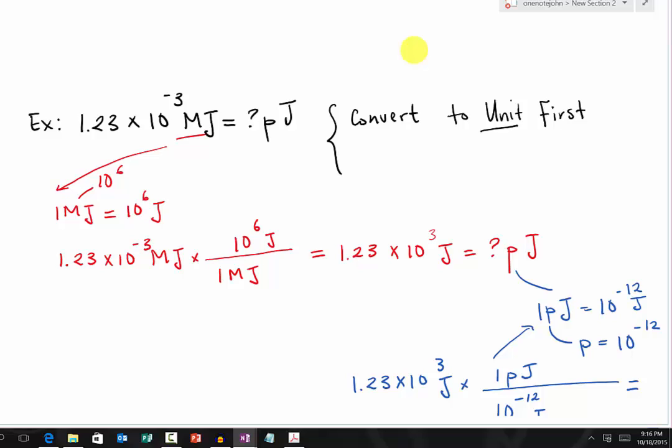Here we have an example. We have 1.23 times 10 to the negative 3 megajoule, and we want to solve for how many picajoule. When we want to convert from any prefix to another prefix, the first thing we need to do is convert to the unit first, which in this case is joule.